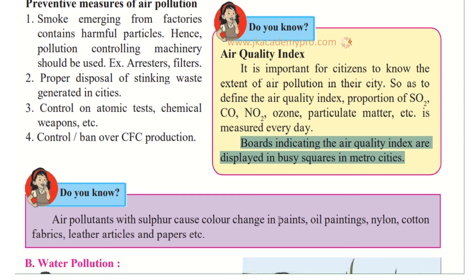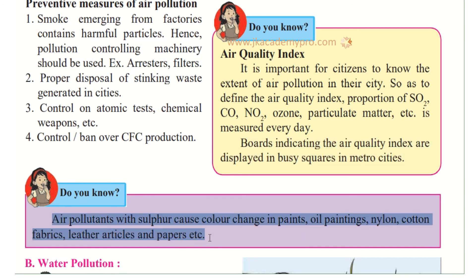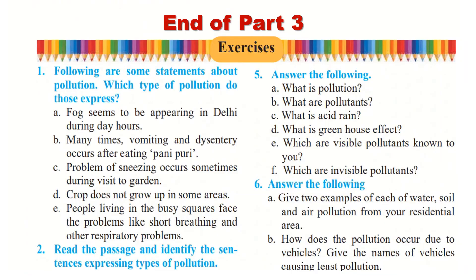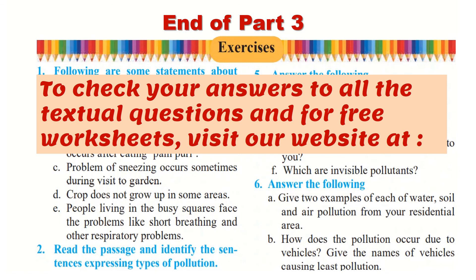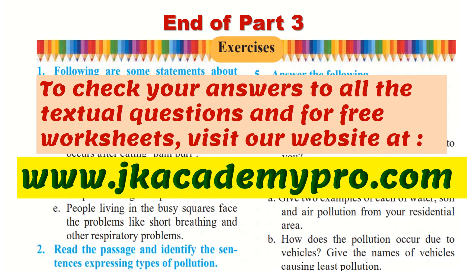Do you know that air pollutants with sulfur cause color changes in paints, oil paintings, nylon, cotton fabrics, leather articles, and paper? Do solve the exercise given at the end of the lesson. You can visit our website at www.jkacademypro.com — the link is in the description box below. Remember to like, share, and subscribe.